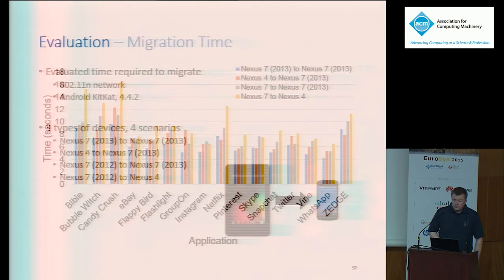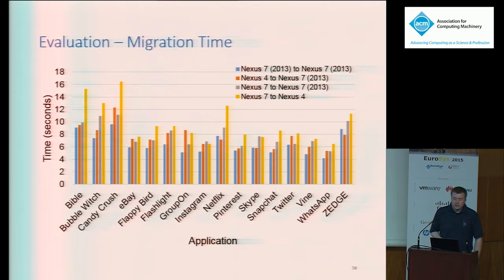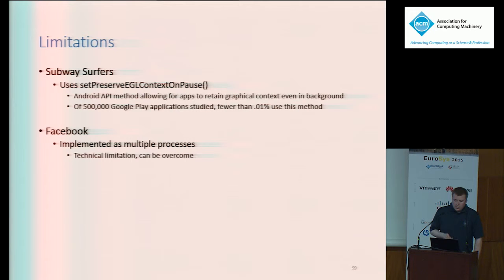Here we have the overall migration time across all four scenarios for each application — total time on the y-axis and the application being migrated on the x. Migration took an average of 7.88 seconds for all applications across all scenarios. More resource-intensive applications such as games like Candy Crush Saga and Bubble Witch Saga skew this average higher, as do scenarios involving the first-gen Nexus 7 due to its poor Wi-Fi adapter operating in the congested 2.4 GHz band. Subway Surfers and Facebook were absent because Subway Surfers uses an API method to persist its OpenGL context while in the background — since Flux relies on eliminating this context, apps using it can't be migrated. However, fewer than 0.01% of 500,000 Google Play applications studied used this call. Facebook failed to migrate because it's implemented as multiple processes — strictly a technical shortcoming that more engineering work can overcome.